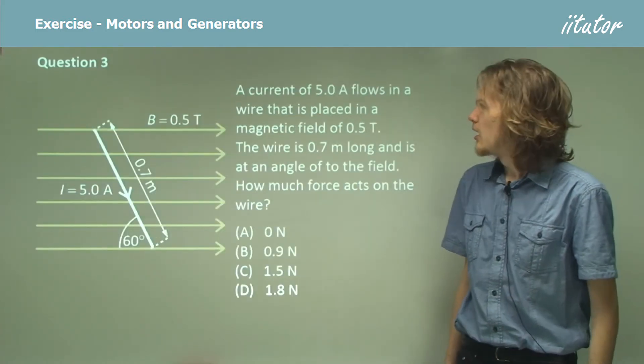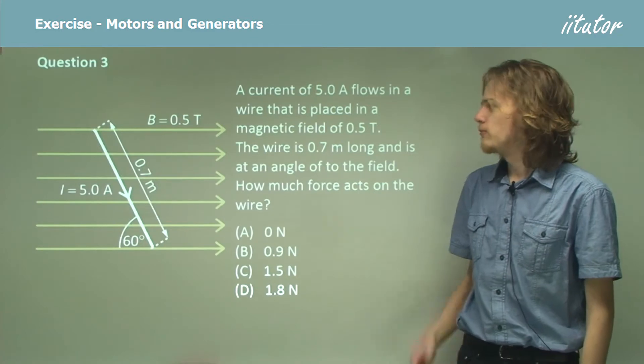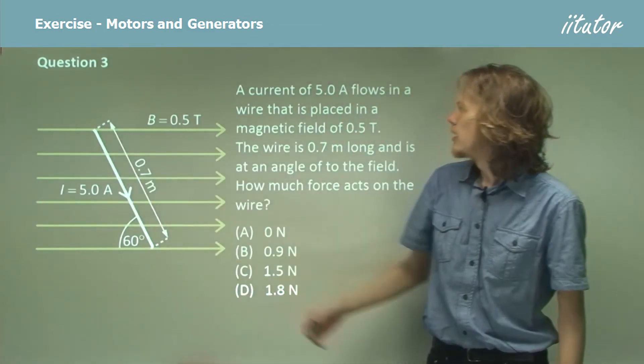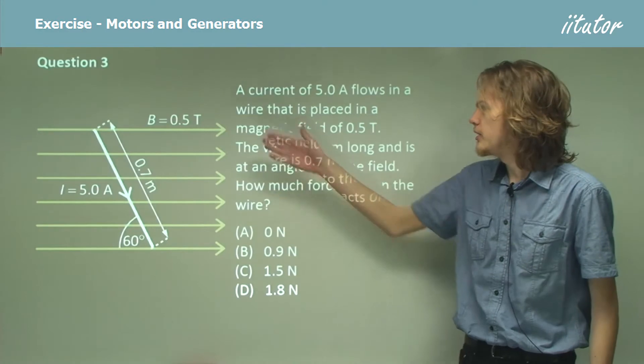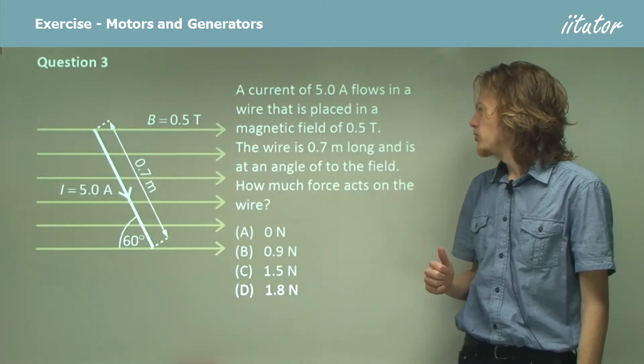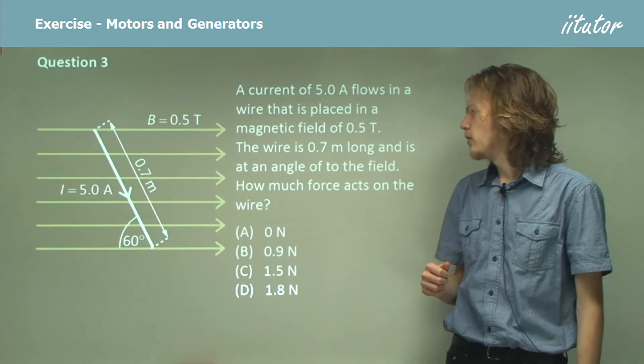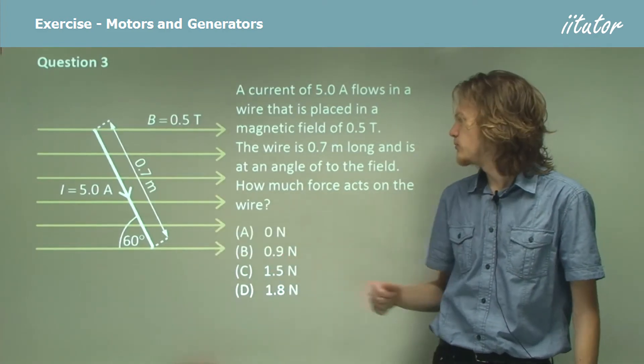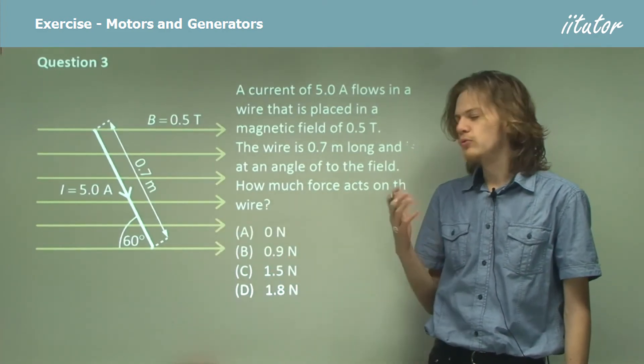Question 3. A current of 5 amps flows in a wire, which we can see over here, that is placed in a magnetic field, the yellow lines, of 0.5 tesla. The wire is 0.7 meters long and is at an angle of 60 degrees to the field. How much force is on the wire?